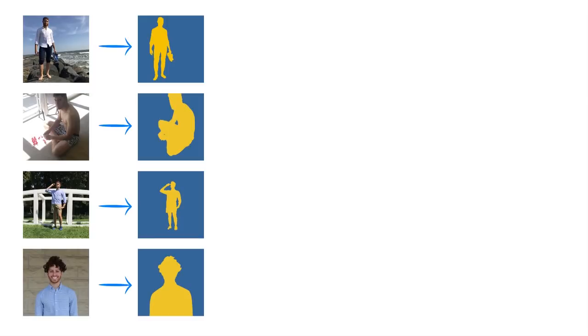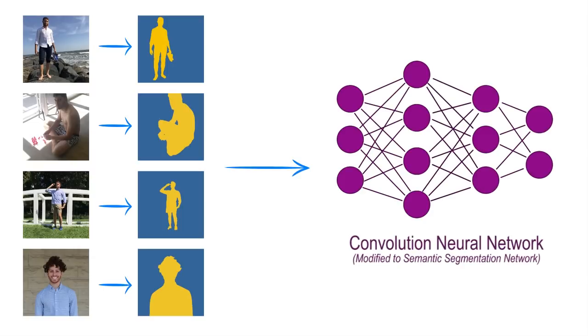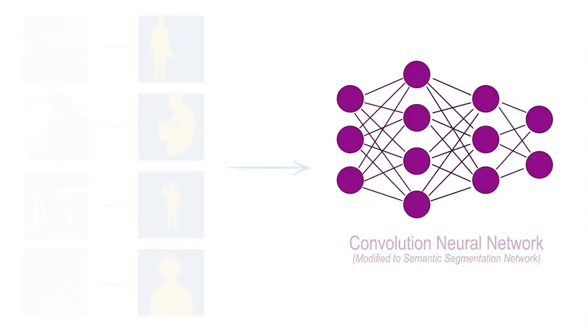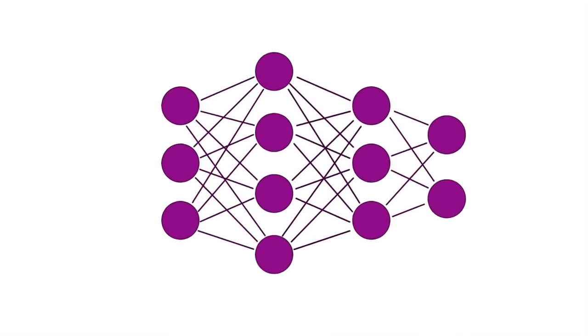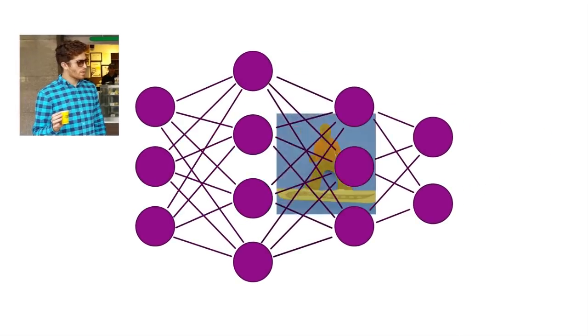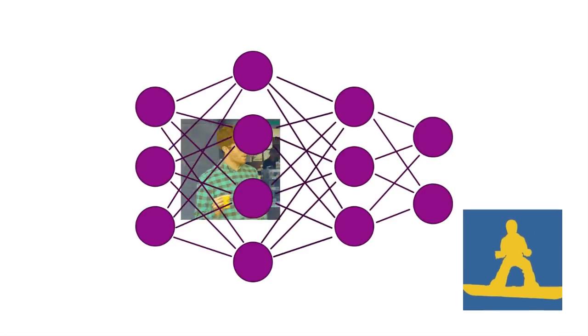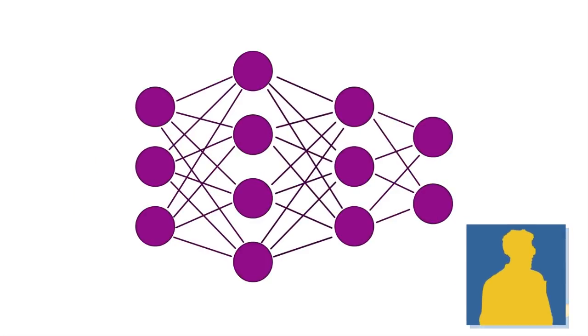The key to semantic segmentation is that the computer actually did the segmenting of that image automatically. In order to do that, we have to take a bunch of images of people standing in backgrounds and label where the people are and where the background is. Then we use that information to create a convolutional neural network. We train that network, and when we put in a new image of a person standing in some background, it'll be able to segment that image into the two parts.